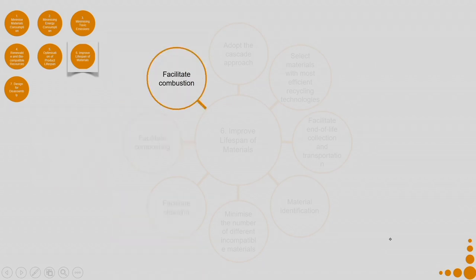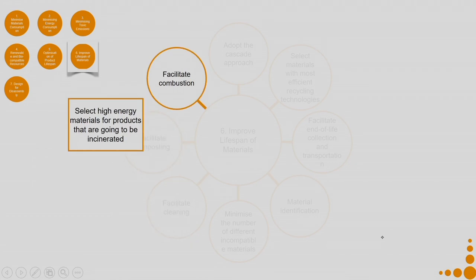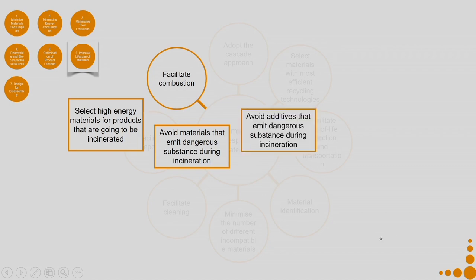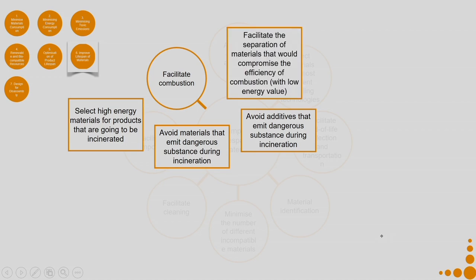Then facilitate combustion — these are all end-of-life processes: select high-energy materials for products that are going to be incinerated, avoid materials that emit dangerous substances during incineration, avoid additives that emit dangerous substances during incineration, and facilitate the separation of materials that would compromise the efficiency of combustion due to their low energy value.